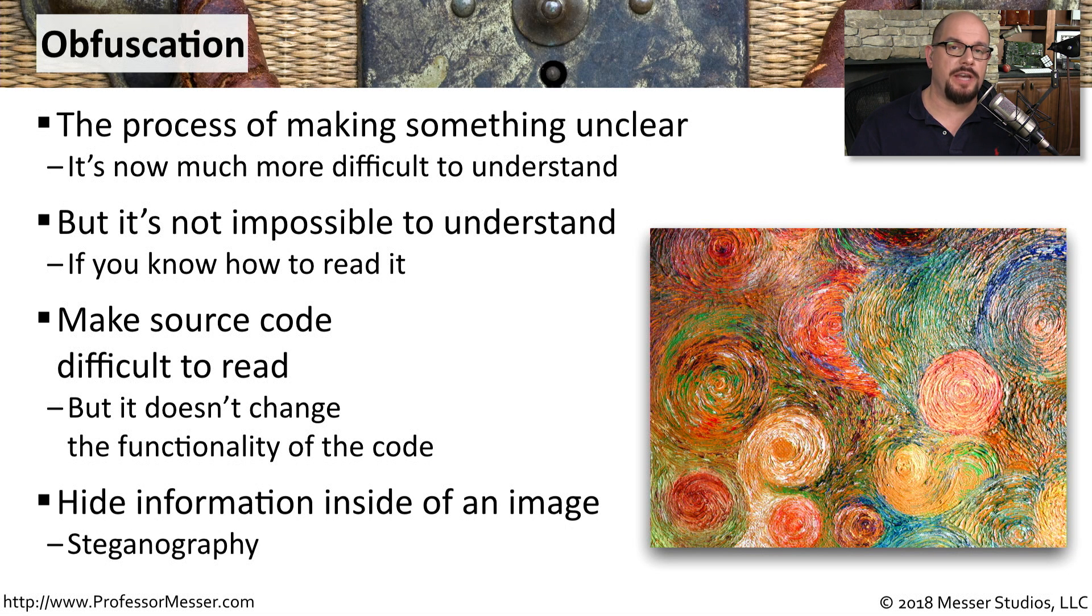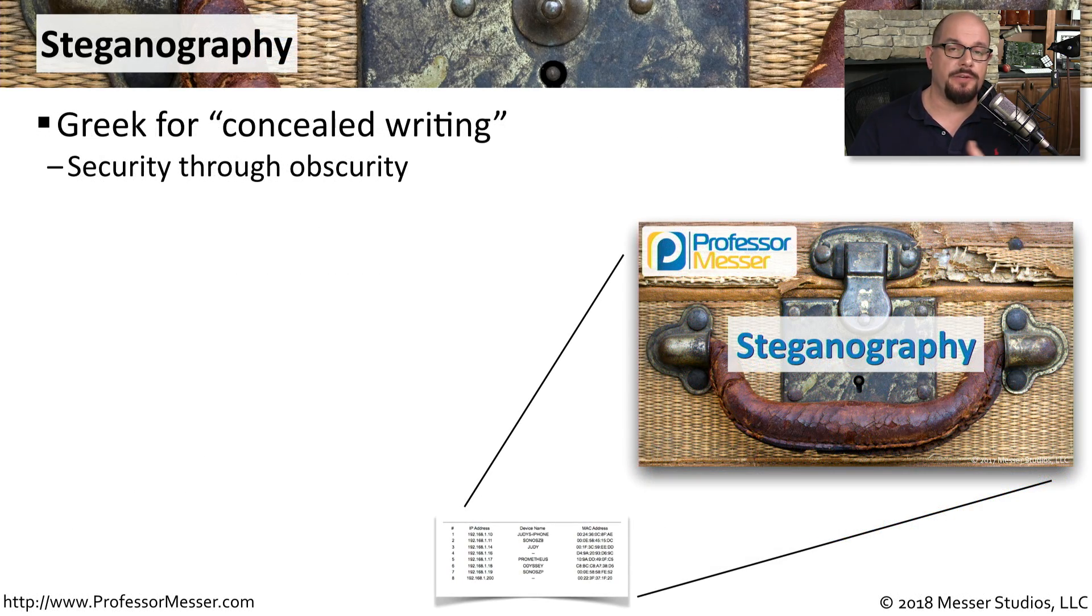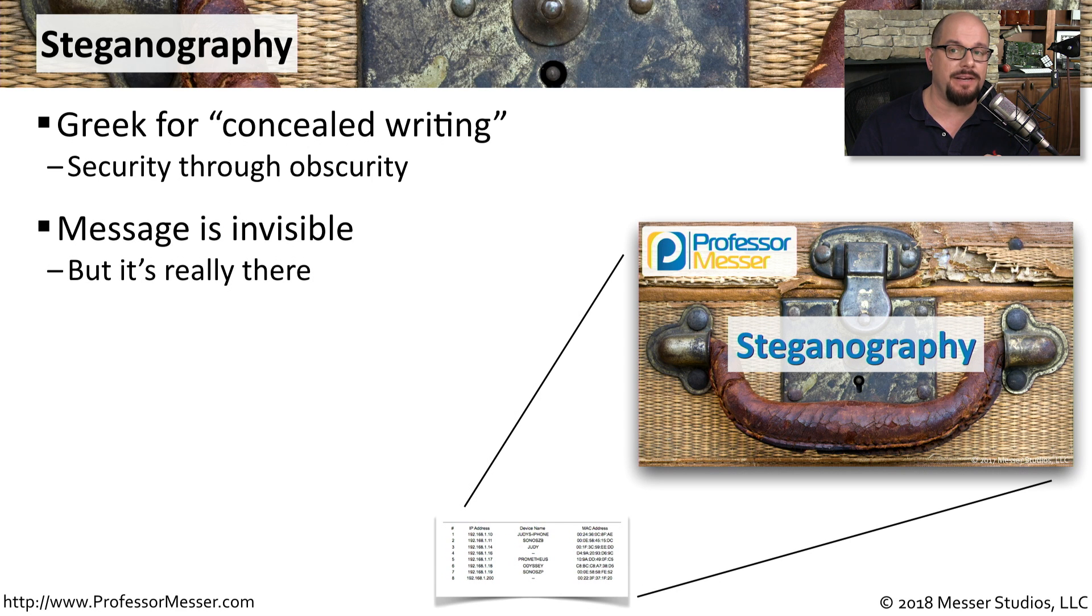One type of obfuscation that works with images is called steganography, where you're hiding information within a picture. The term steganography derives from the Greek for concealed writing, and this is a method of security through obscurity, because if you knew where the message was inside of the image, it would be very easy to read.